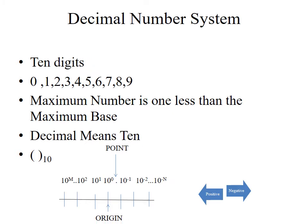The decimal number system is the most general number system we use. It consists of 10 digits: 0, 1, 2, 3, 4, 5, 6, 7, 8, and 9, since the maximum digit is 1 less than the base. Decimal means 10, and it is represented with a subscript 10 in brackets. In the diagram, the base is replaced by 10.